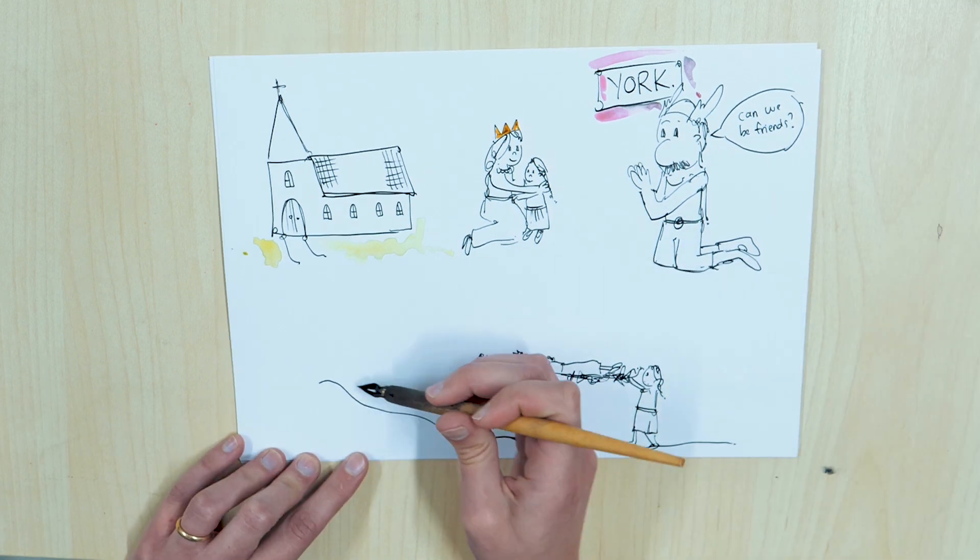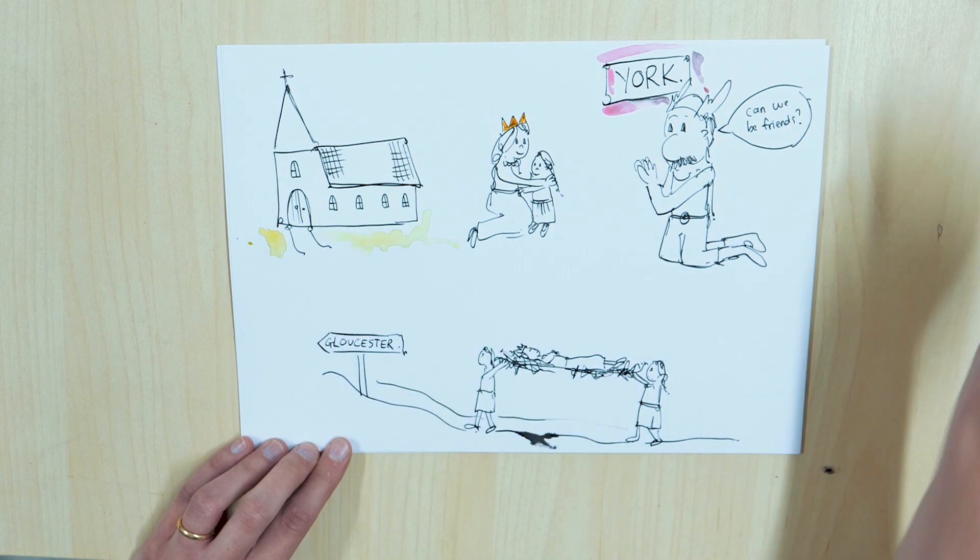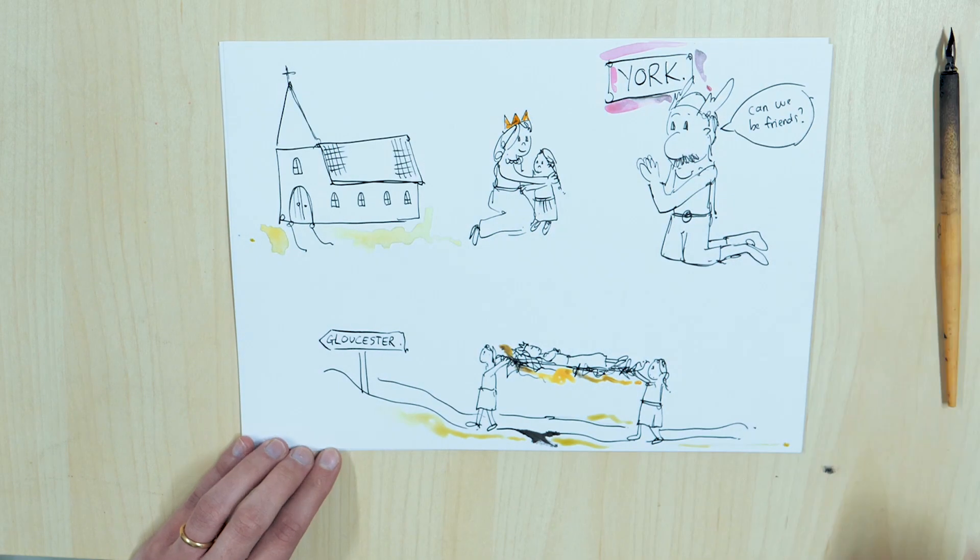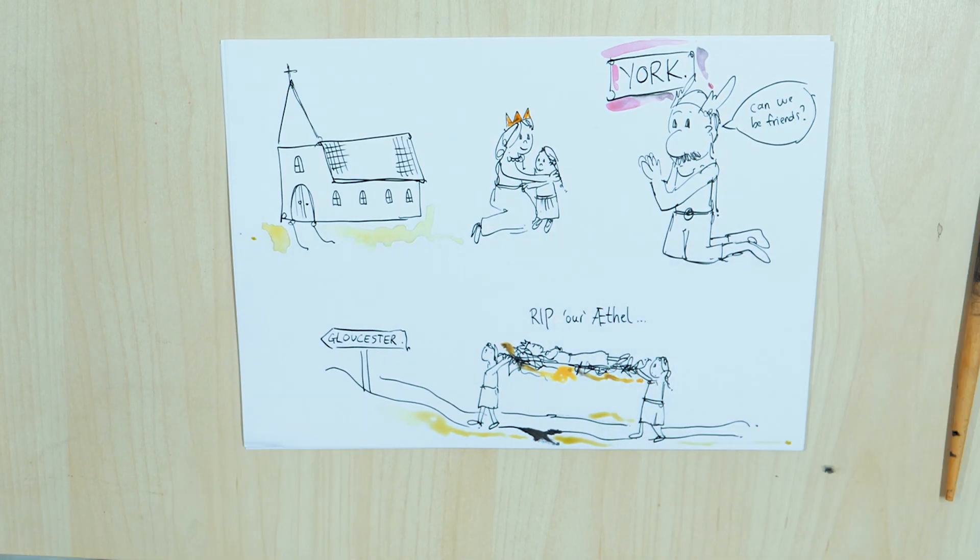It is said that some of her remains were buried in Tamworth, where she passed away, and her body transported to Gloucester for burial, alongside her husband Aethelred.